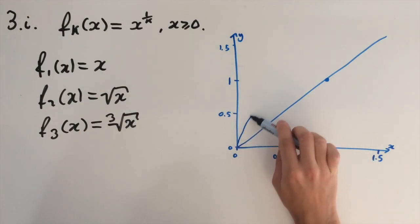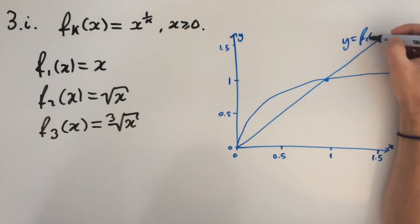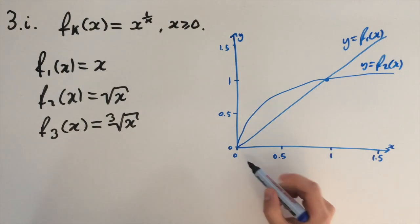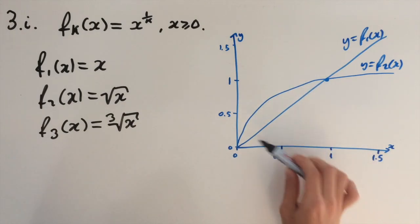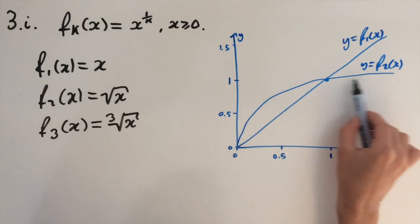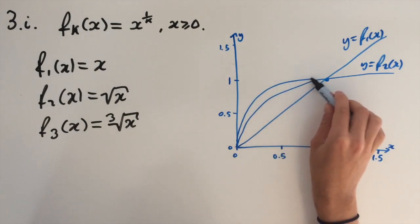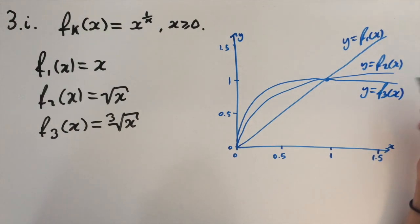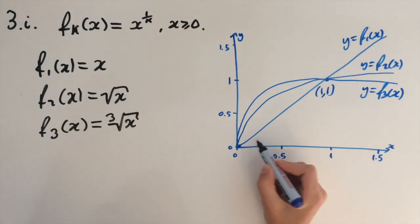I should label these, so this is y equals f1 of x, and this is y equals f2 of x. And lastly, f3 of x — this is going to be a similar shape to f2 of x, but the curve is going to be steeper before the point 1, 1, and then it's going to be below both of these curves afterwards. So that's y equals f3 of x. Last thing is to find where they intersect, and that's obviously going to be at point 1, 1, but don't forget there's another one at the origin, so 0, 0.